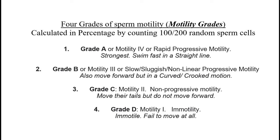Grade B, or motility 3, sperm cells have slow, sluggish, or non-linear progressive motility. These also move forward but tend to travel in a curved or crooked motion. Grade C, or motility 2, is non-progressive motility — these sperm move their tails but do not move forward.